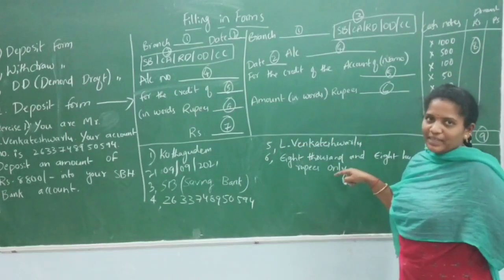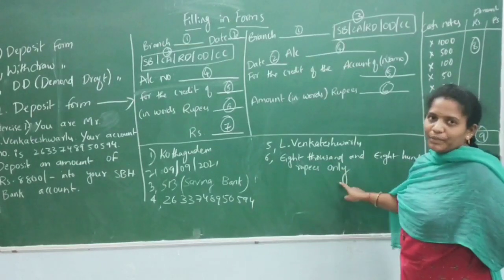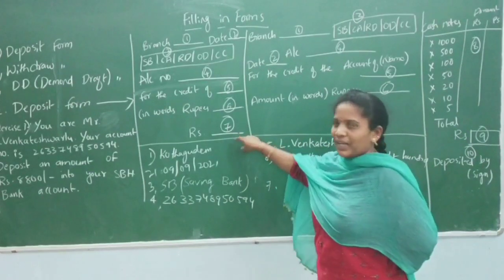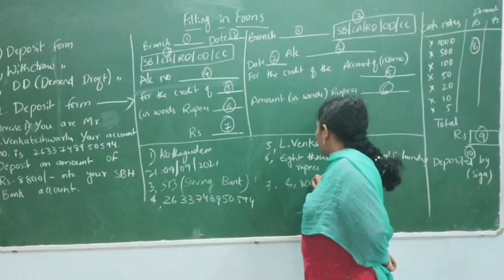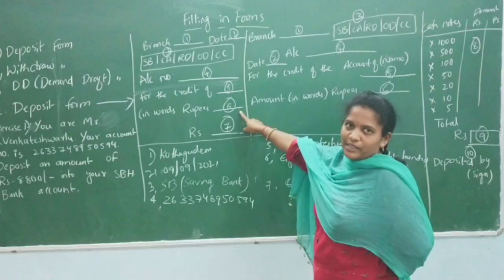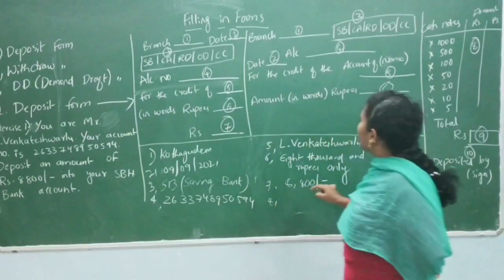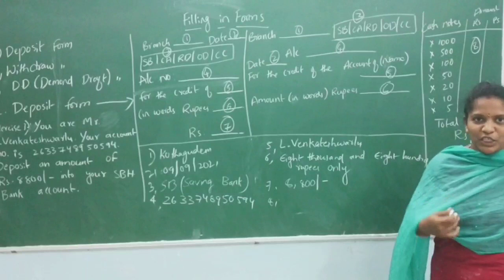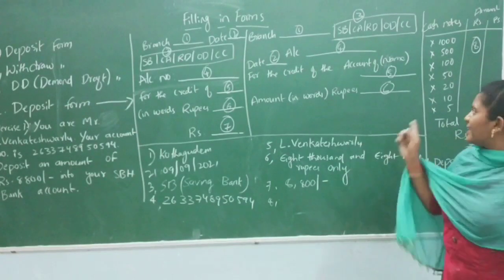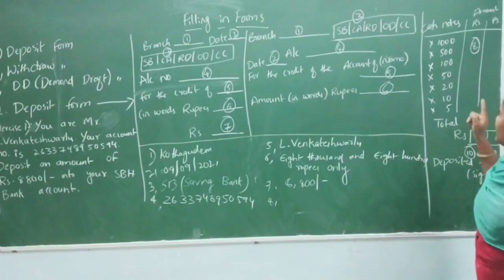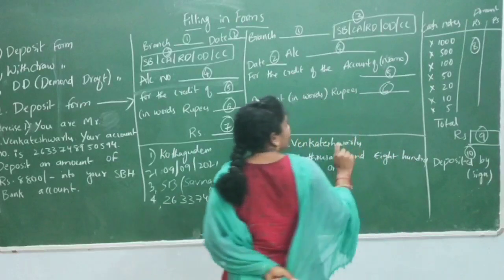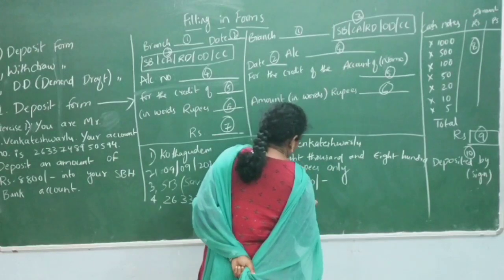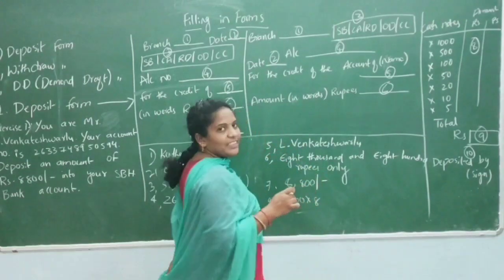Now we need to break down the amount into denominations. First, one thousand rupee notes - write the number and multiply. Then five hundred rupee notes, if any. Then one hundred rupee notes.